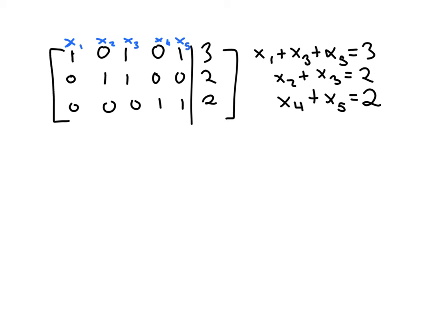Now, the basic variables of the system are the variables that correspond to the pivot columns. So x1 is a basic variable because there's a pivot here. The next pivot is right here in the x2 column.